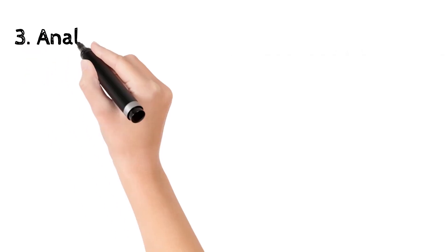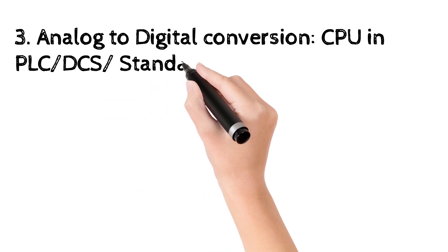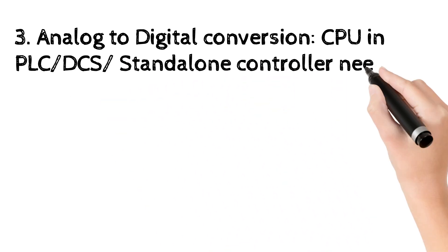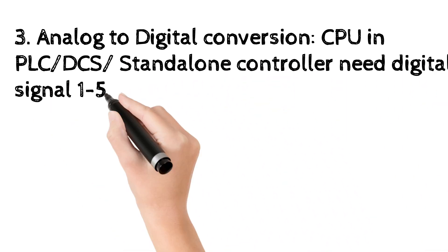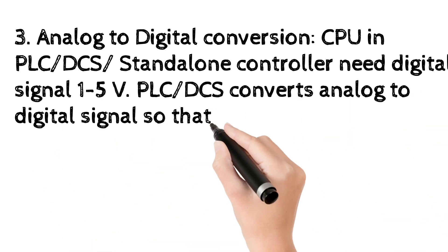3. Analog to digital conversion. CPU in PLC, DCS, standalone controller need digital signal 1 to 5 V. PLC, DCS converts analog to digital signal so that the CPU can read it.